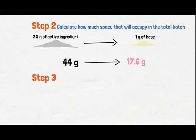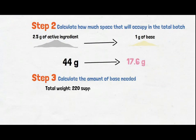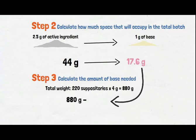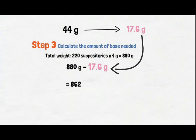The final step is calculating the amount of base needed, taking into account the amount of base displaced by the active ingredient. Calculate the total weight of the batch, which is 220 suppositories times 4 grams, giving you 880 grams. So 880 grams minus the displaced weight of 17.6 grams gives you 862.4 grams. Don't forget to round to the nearest 5 grams, giving you 860 grams.